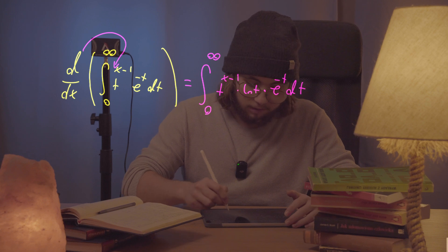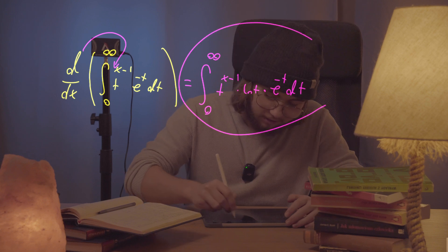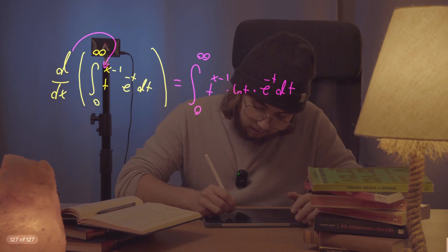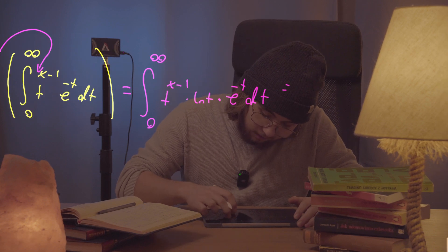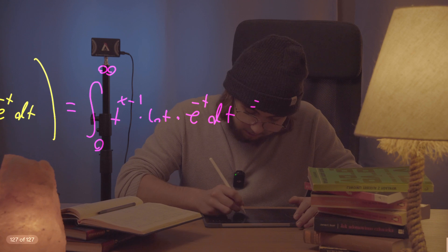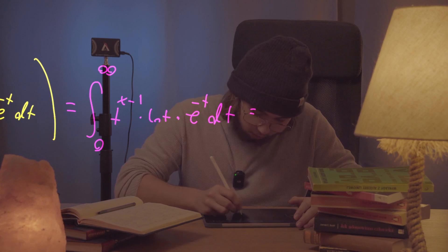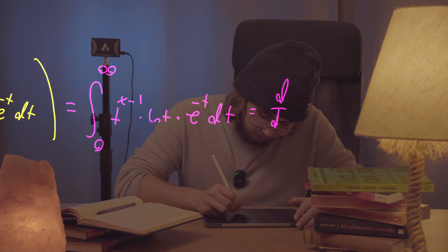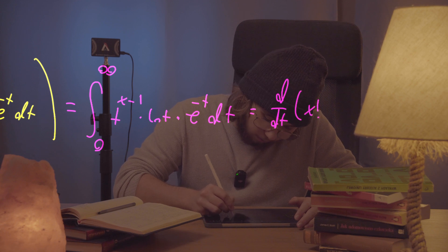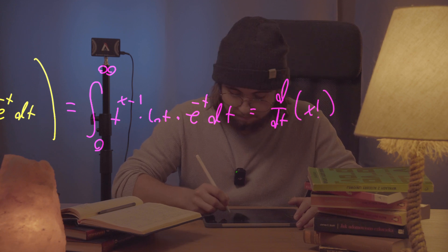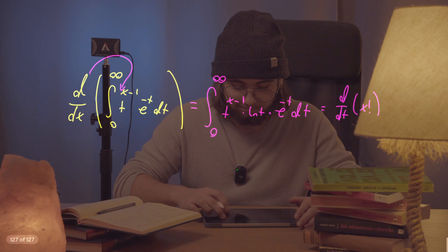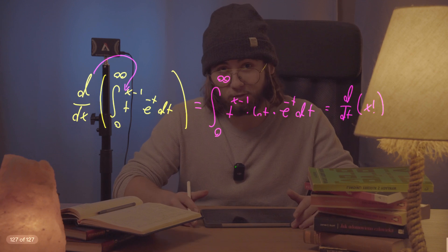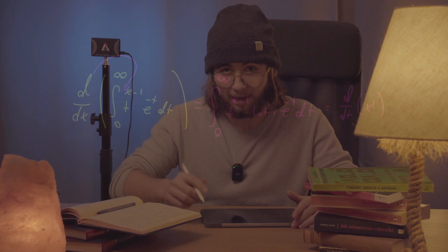This gives us the integral from 0 to infinity of t to the power of x minus 1 multiplied by the natural log of t, times e to the power of negative t dt. And ladies and gentlemen, this is the derivative of x factorial. Hope you enjoyed it, see you in the next one. Bye.